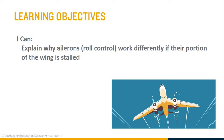The learning target for this lesson is to explain how and why the ailerons work differently if their portion of the wing is stalled. You'll learn that ailerons don't work very well if their portion of the wing is stalled, and we'll go over why in this lesson. In the next lesson, we'll go over the solution aircraft designers use to make aileron controls work through a higher angle of attack.